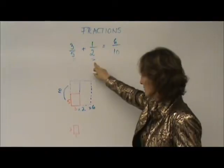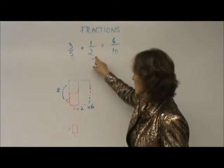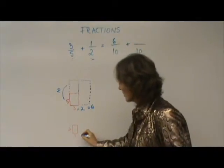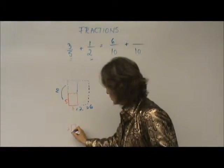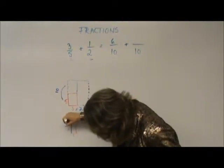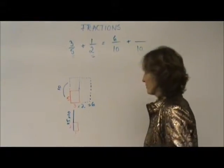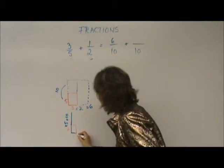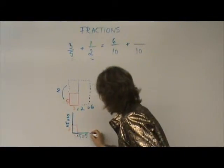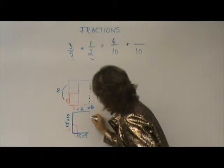Same thing with the second picture. 1 half, if you want to enlarge to 10, how many times do you have to enlarge 2 to become 10? 5 times. So, one has to be enlarged 5 times as well, and it will become 5. This is where you keep the proportion of the picture.